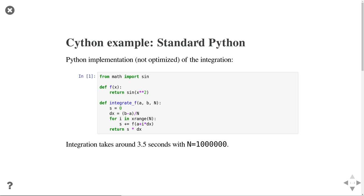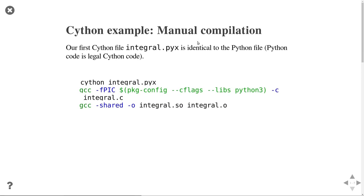If we run this with standard Python it takes about 3.5 seconds on 1 million rectangles. To make this a Cython implementation, we take our Python implementation and just rename it — if the original was called integral.py, we rename it to integral.pyx. The .pyx extension is typically used for Cython files. Nothing else changes — any Python code is also legal Cython code. Now the difference is that we will compile our Cython program.